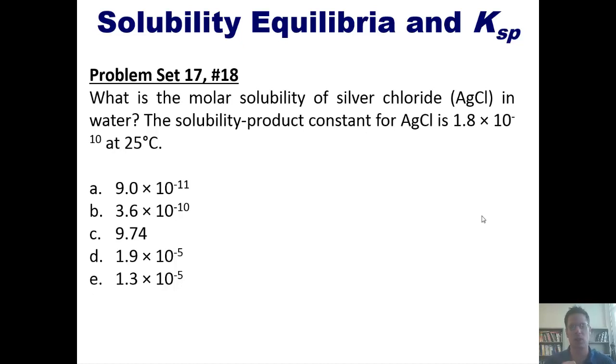What is the molar solubility of silver chloride in water? The solubility product constant for silver chloride is this number at 25 degrees C. As per usual, you can attempt this on your own, and then, if you like, click the link here to a separate video in which I show you how to do it on the board.